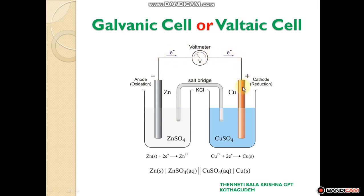These electrons reach the cathodic half-cell, where they are gained by Cu²⁺ ions present in the electrolytic solution. The Cu²⁺ ions gain two electrons and are converted to copper metal. This flow of electrons is called electricity, so this cell generates electricity. Electrons flow from the anodic part to the cathodic part — this is the flow of electrons, which means electricity.